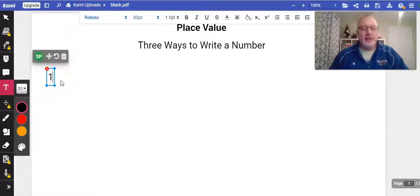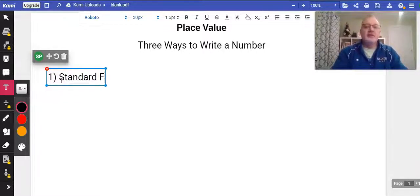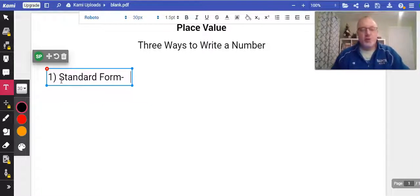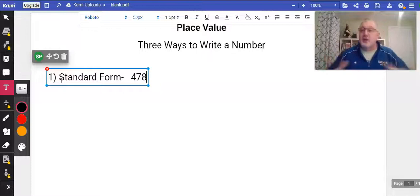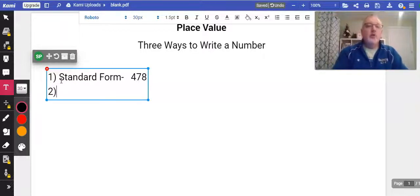The title is three ways to write a number, three forms of a number. Our first one that we're going to look at is our standard form, and again I would have the kids take notes on this because this is really pretty important. Standard form is, and we'll just pick a hundreds, 478. You're just writing a number just like you would normally write a number.